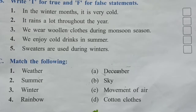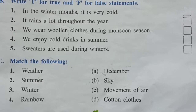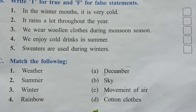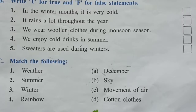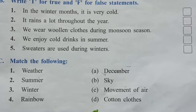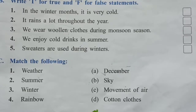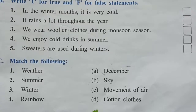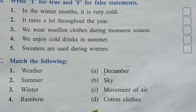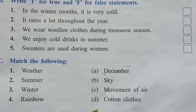Question C: Match the following — 1. Weather, 2. Summer, 3. Winter, 4. Rainbow — with A. December, B. Sky, C. Movement of air, D. Cotton clothes. Do page number 43, Questions A, B, C in your book and new words in your notebook. If you like the video, please like and subscribe our channel. Thank you.